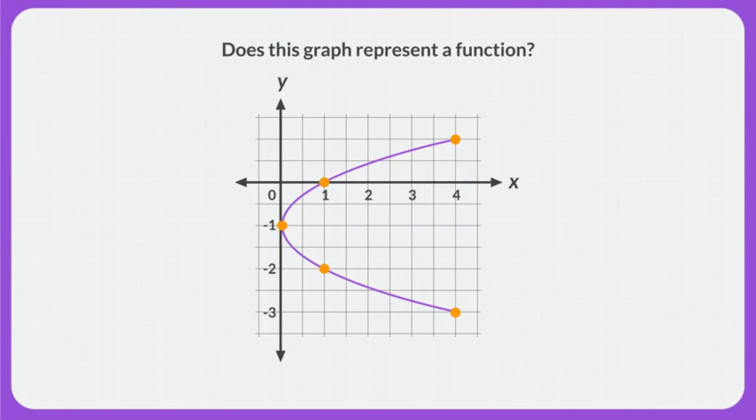I'm going to figure out if this graph represents a function. To be a function, every input needs to have exactly one output. On the graph, each point represents an ordered pair. The x values are the inputs, and the y values are the outputs.